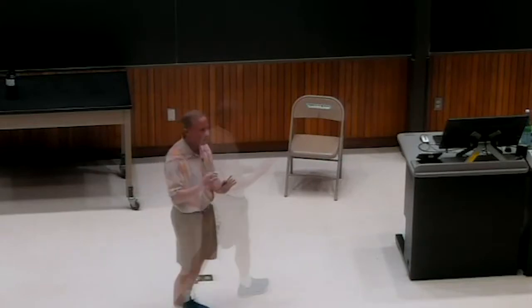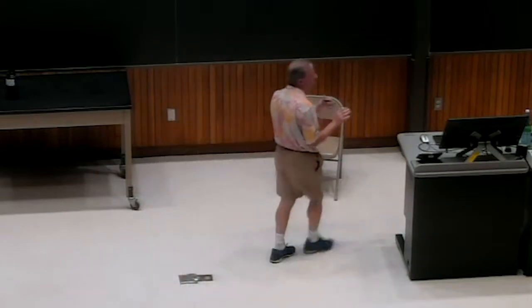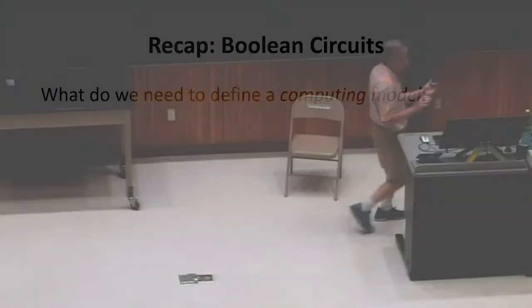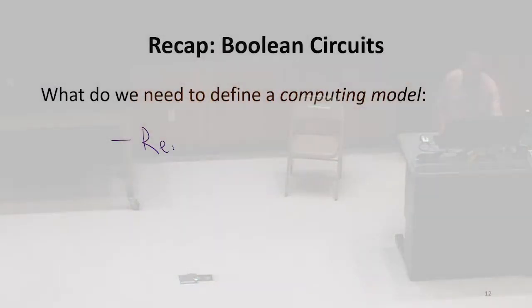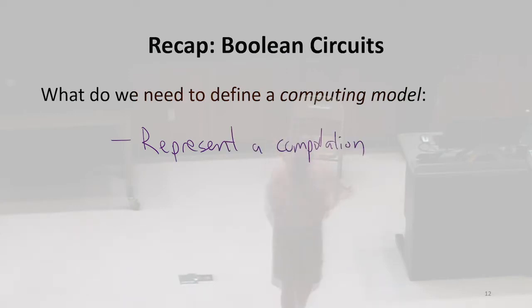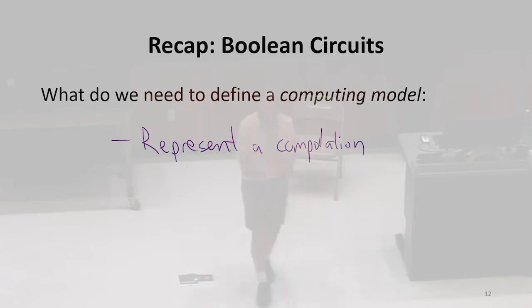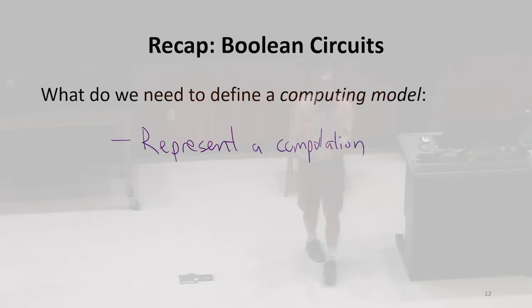Between the three answers we got, we kind of got the two pieces. We need something that represents the computation — here are all the programs that we can write, what the things we can represent are. With a Boolean circuit, it's the graph of the gates and the gate labels. This is the representation.